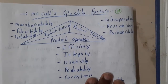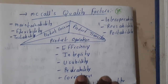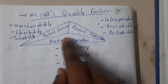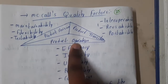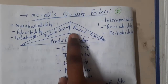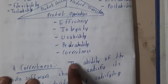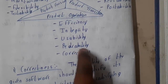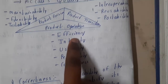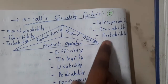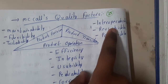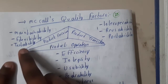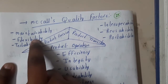Hello guys, we are back with our next lecture. In this lecture, let us go through the quality factors proposed by McCall. He discussed three different major topics: product operations, product transition, and product revision. In product operations we have correctness, reliability, usability, integrity, and efficiency. In product transition we have portability, reusability, and interoperability. In product revision we have testability, flexibility, and maintainability.